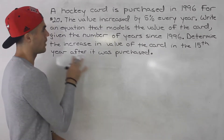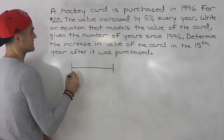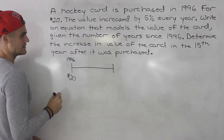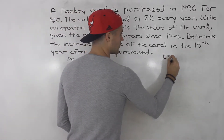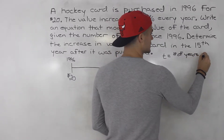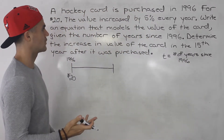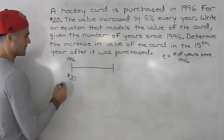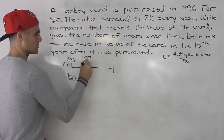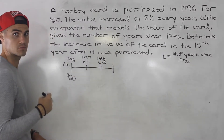Let's first get an equation that models this scenario. Let's draw a timeline. We're told the hockey card is purchased in 1996 for $20. Let's introduce a variable t, where t is the number of years since 1996. So in 1996 the t value is 0, in 1997 t is 1, and in 1998 t is 2, and so on.